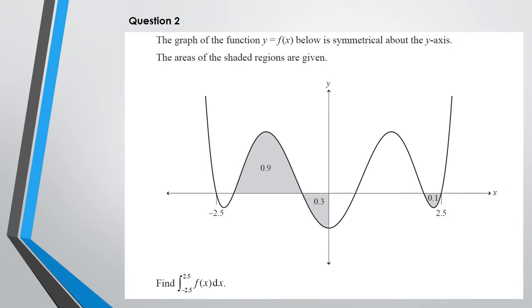So if we think about it, if it's symmetrical, because this area is 0.3, looking at this, this area is 0.3. We can also say that this area would be 0.3. And as for the area above the x-axis, this is 0.9, which means this is also going to be 0.9.